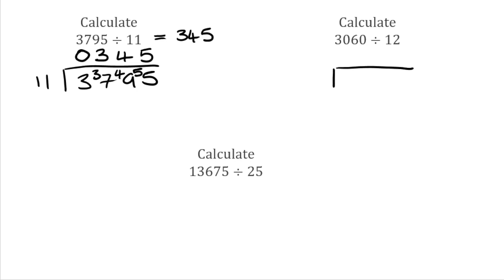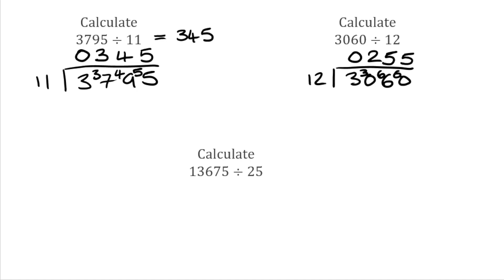For our next question we have 3,060 divided by 12. 12s into 3 don't go, so we carry over the 3. 12s into 30 go twice, because 12 times 2 is 24, leaving a remainder of 6. We then do 12s into 66 — that goes 5 times, because 12 times 5 is 60, with a remainder of 6. And finally, 12s into 60 goes exactly 5 times. So our answer is 255.